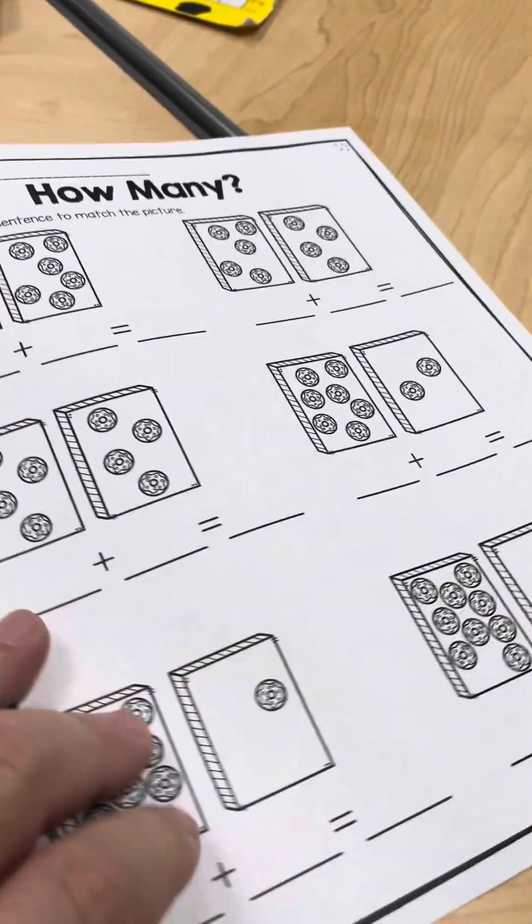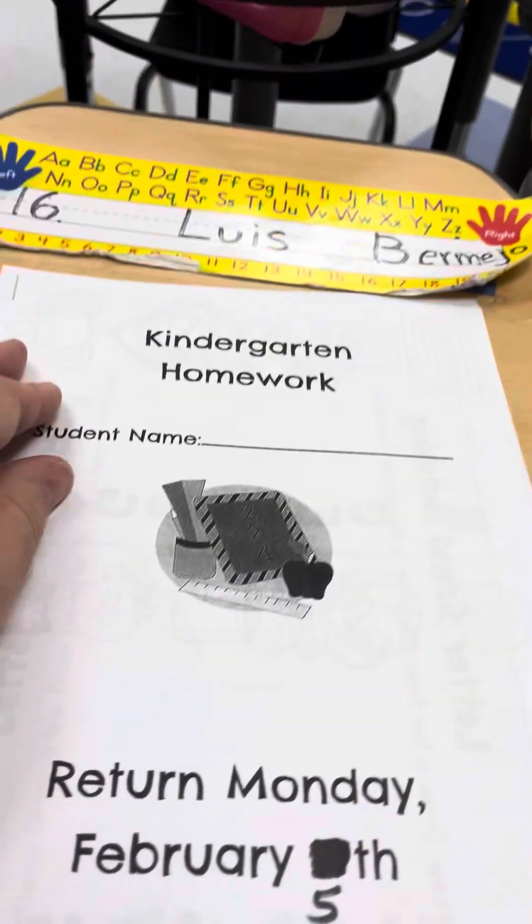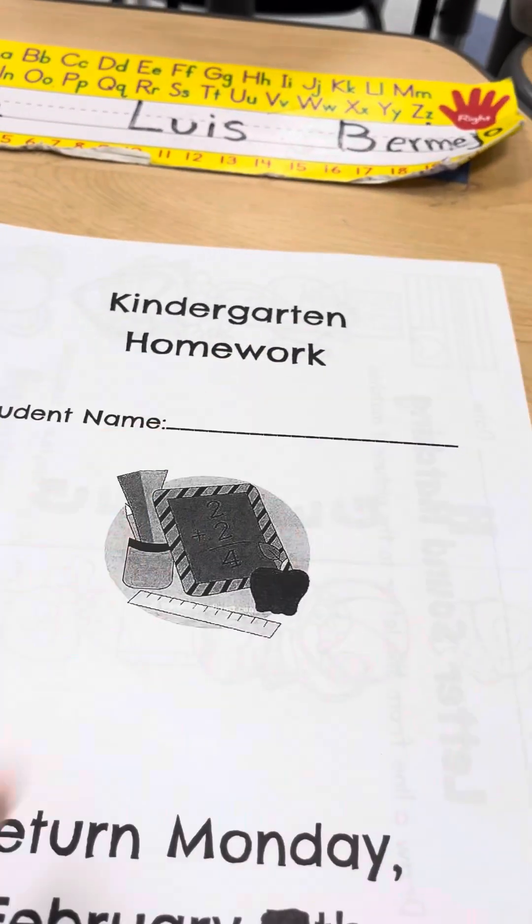I thought I had some subtraction. Oh, okay. There we go. I thought I had some subtraction, but I don't have subtraction. That was the kindergarten student homework.